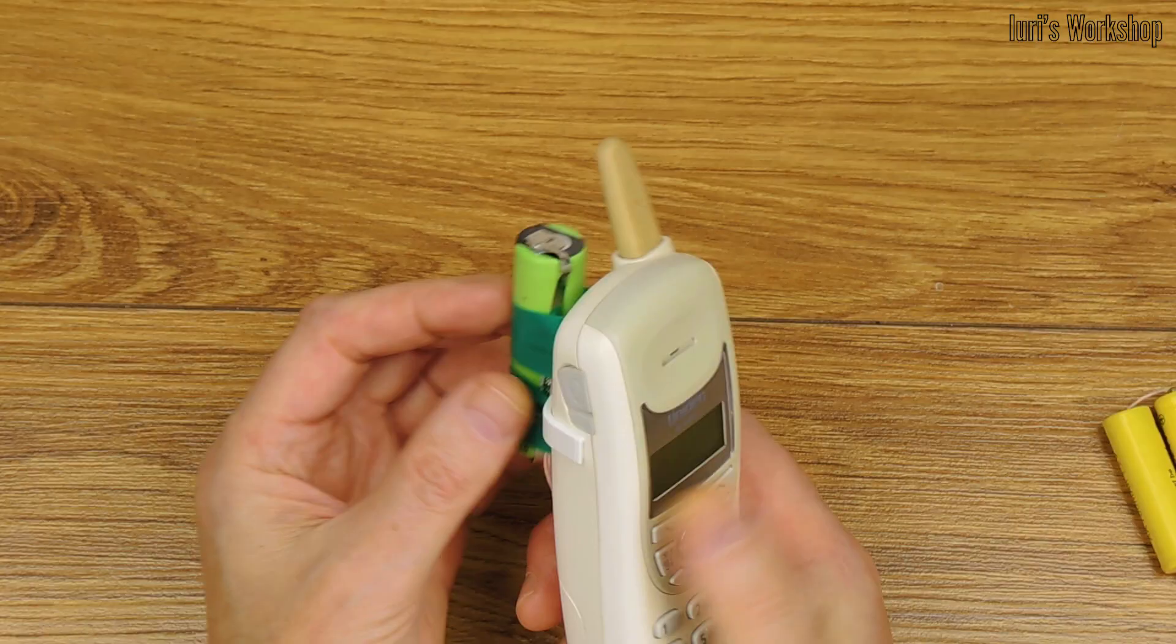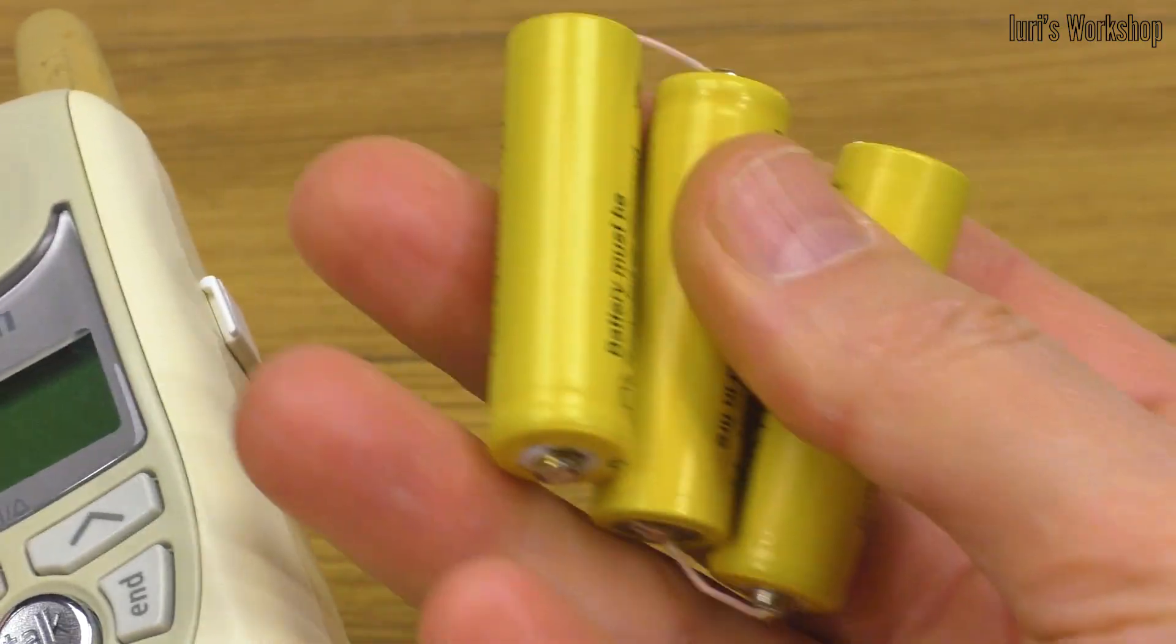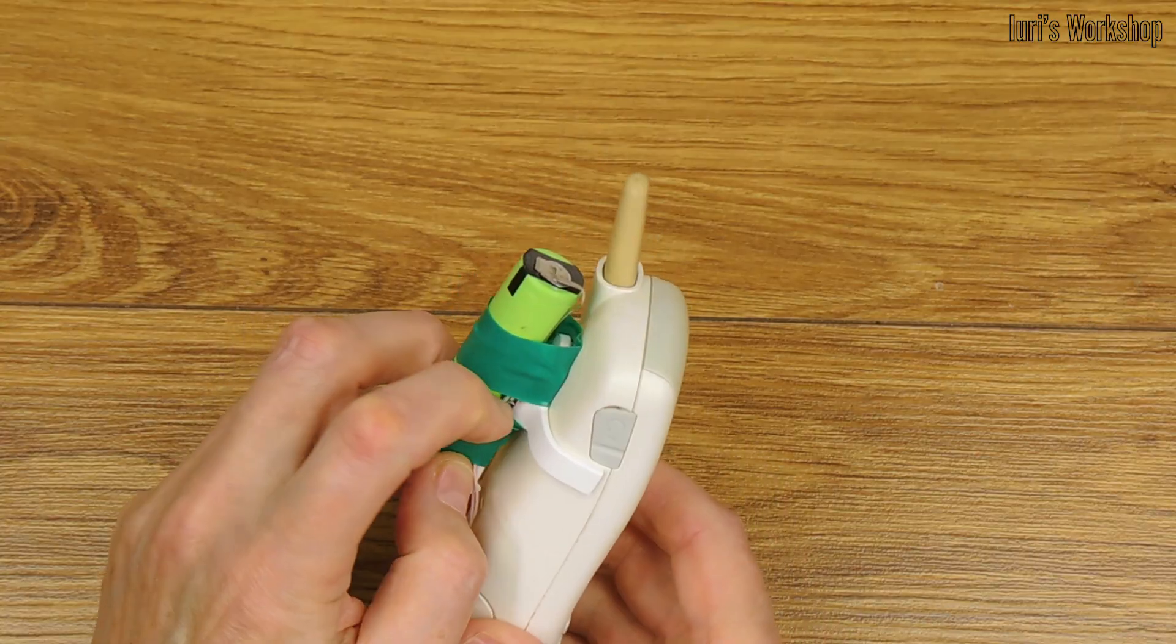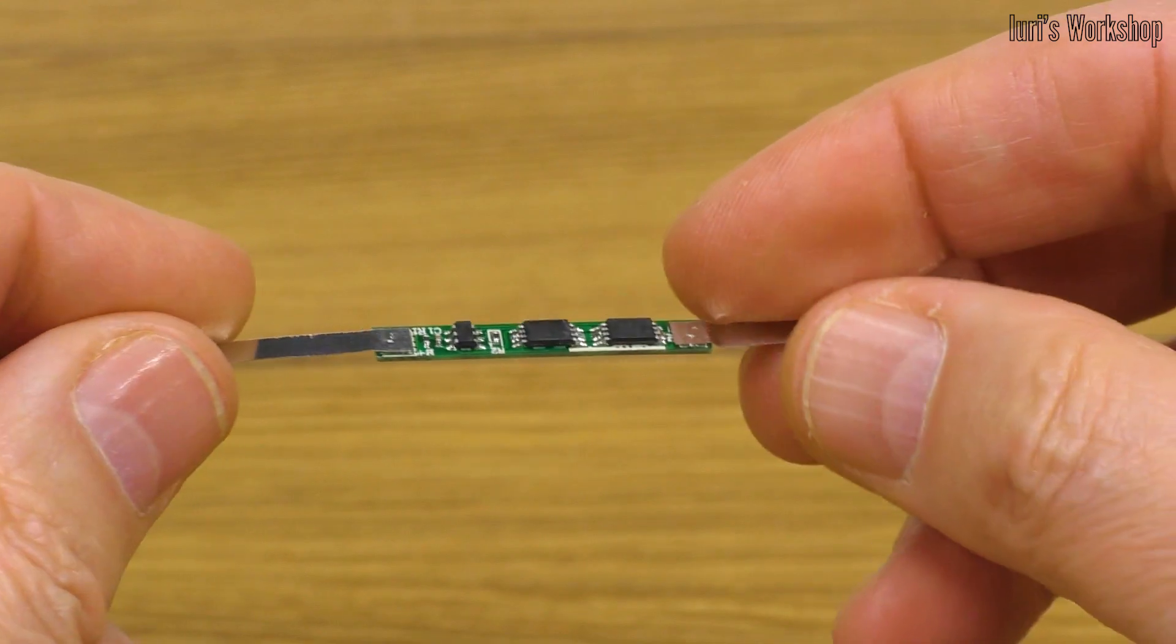For example, in a radio telephone, one lithium-ion cell will successfully replace three nickel-magnesium batteries. And here is hidden such a protection board, which is included according to the above diagram.